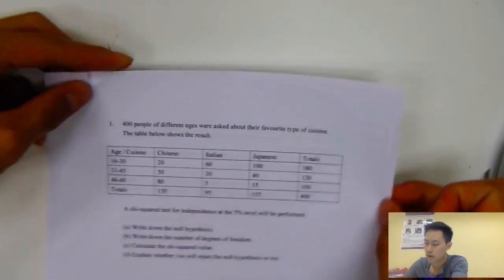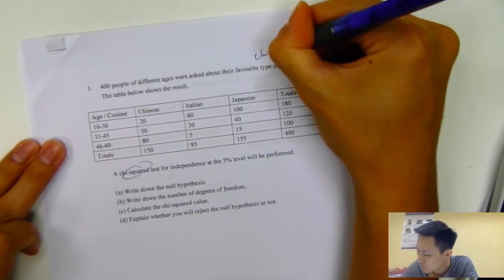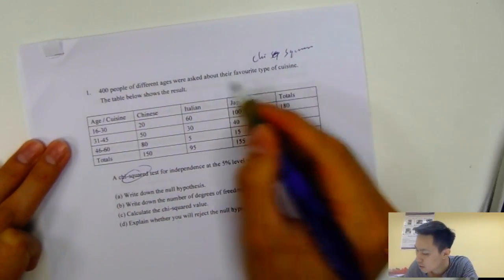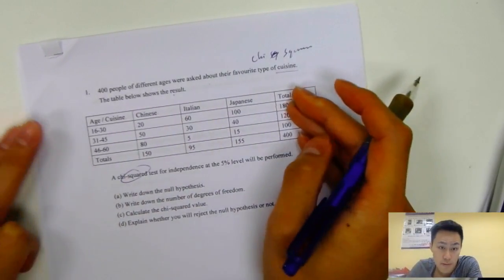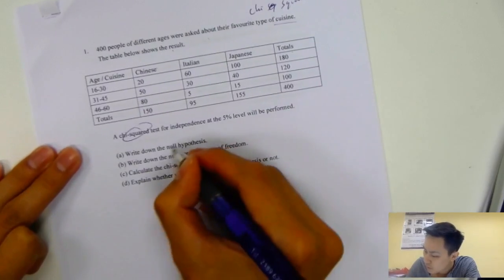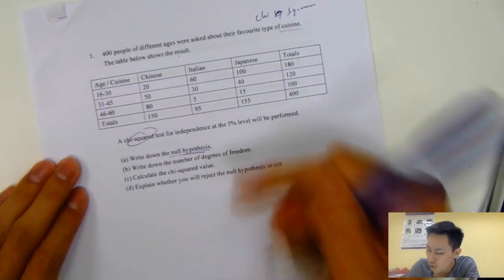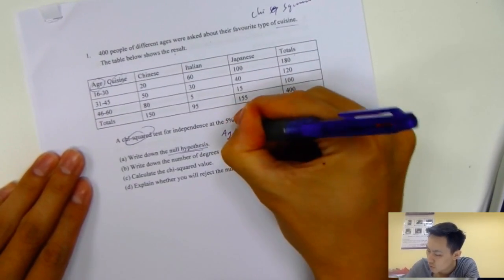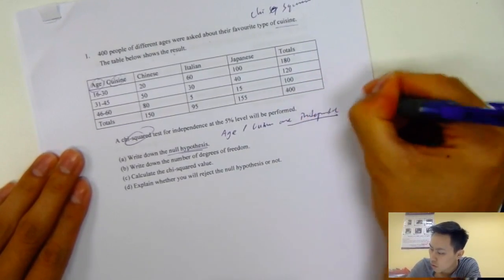Next question will be on the chi-square test. This is also a must question type on your paper. 400 people of different ages were asked about their favorite type of cuisine. The table below shows the results: Chinese, Italian, Japanese, and the total. First of all, you want to write out the null hypothesis. Null hypothesis is always the same. You always assume two things are independent events. We're looking at age and cuisine, so we assume age and cuisine are independent events.